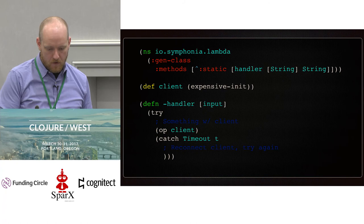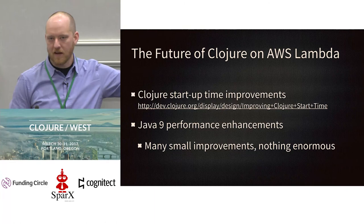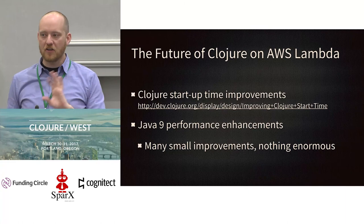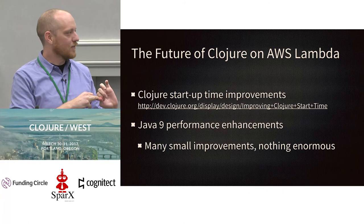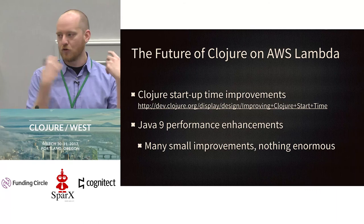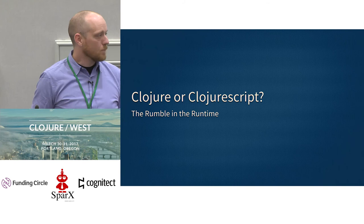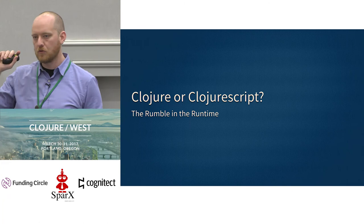Let me mention Clojure startup time improvements. Java 9 is going to have some small performance enhancements — nothing that stood out to me at a glance. Project Jigsaw is a whole other area, and when it comes initially everything will still continue to work as it does now, but if the Lambda runtime changes to prefer that over Uber jars we'll have to rethink how we build deployment packages. But I do want to talk about this: Clojure or ClojureScript. Like I said, we're sort of lucky — we get to choose between running Clojure on the JVM on Lambda, or ClojureScript on Node on Lambda.